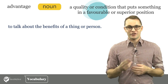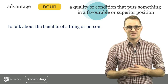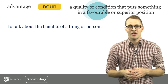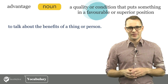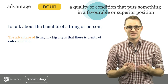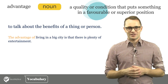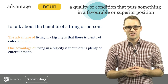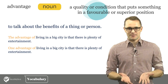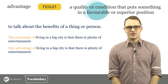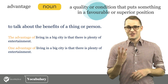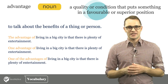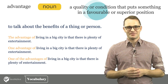We often use Advantage to talk about the benefits of a thing or person. For instance, the following three sentences use Advantage to describe the benefits of living in a big city. Number one: the advantage of living in a big city is that there is plenty of entertainment. Number two: one advantage of living in a big city is that there is plenty of entertainment. Number three: one of the advantages of living in a big city is that there is plenty of entertainment.